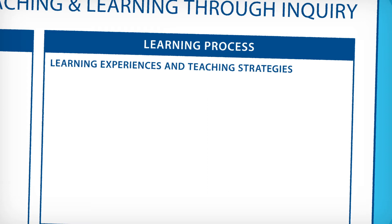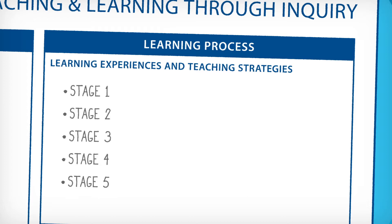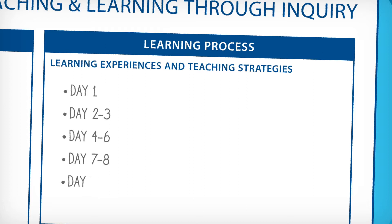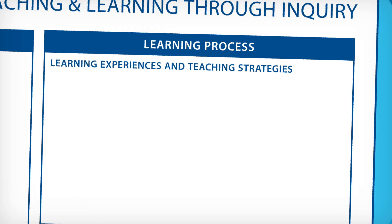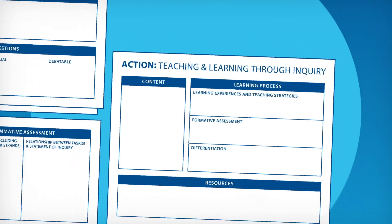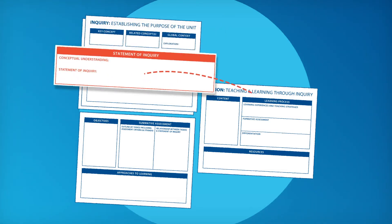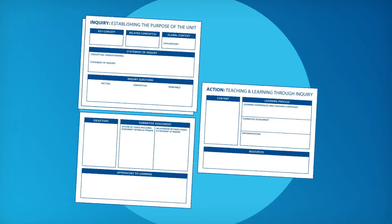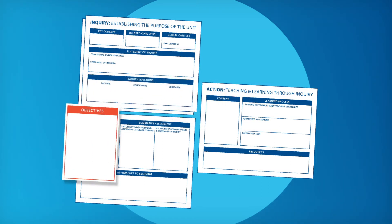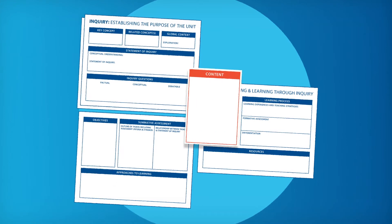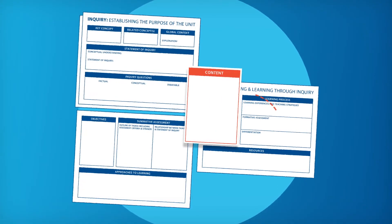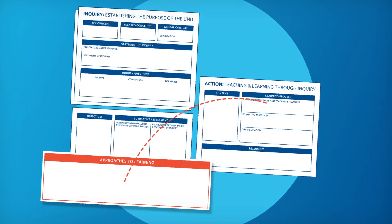Different schools may have different requirements and/or formats for this section of the unit plan, but in general the description should provide at least brief details about when and how all aspects of the unit are developed. These details can include when and how students will explore the concepts, conceptual idea, and context expressed in the statement of inquiry; explore the unit's inquiry questions; develop each of the identified objectives; and inquire into the unit's content.